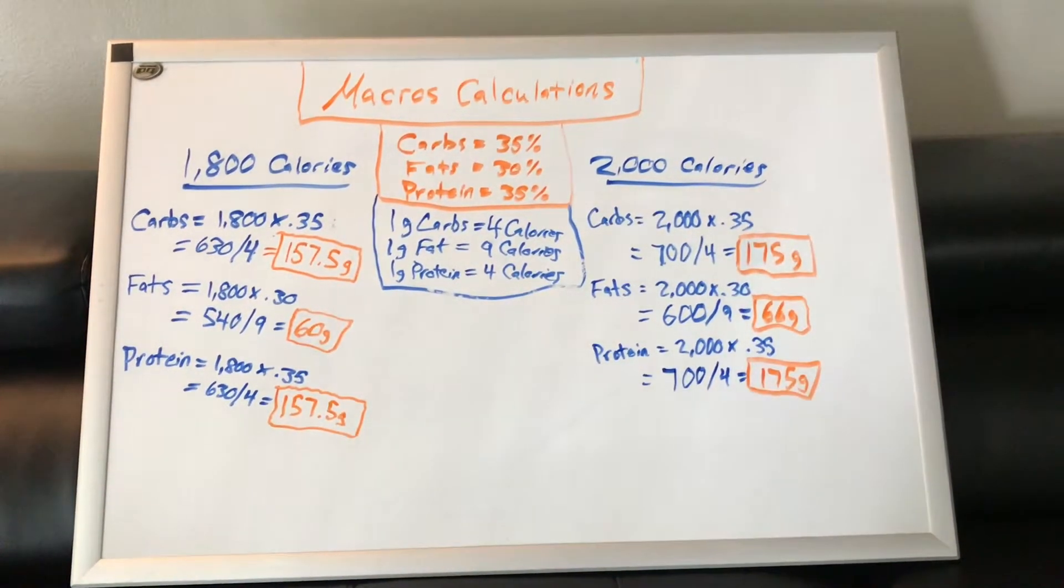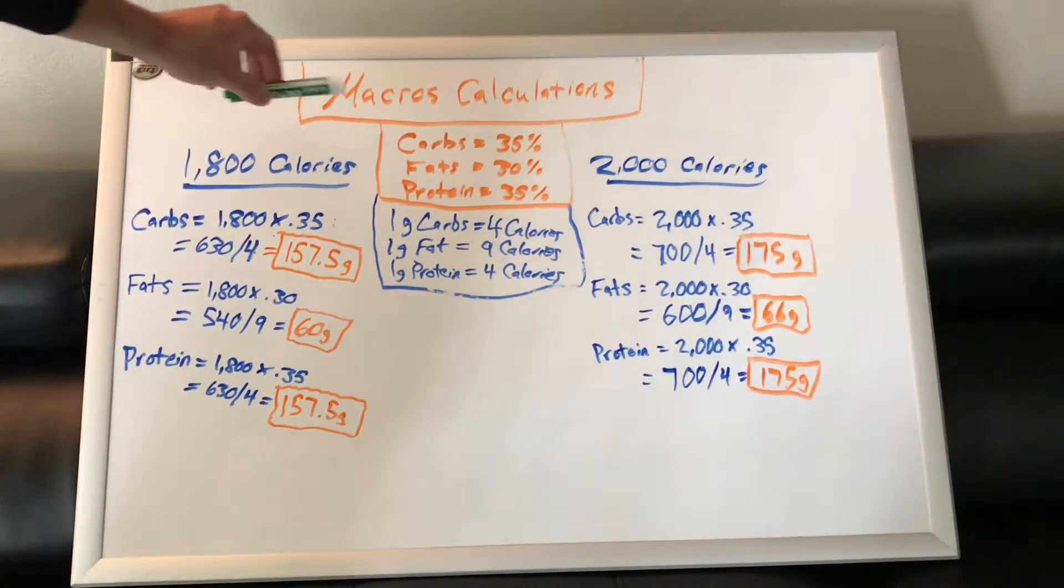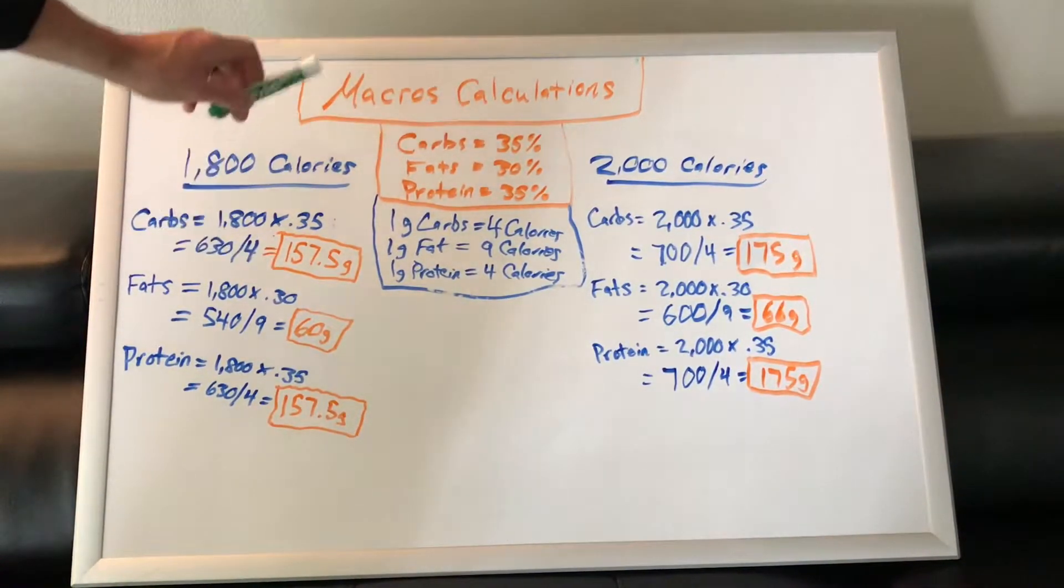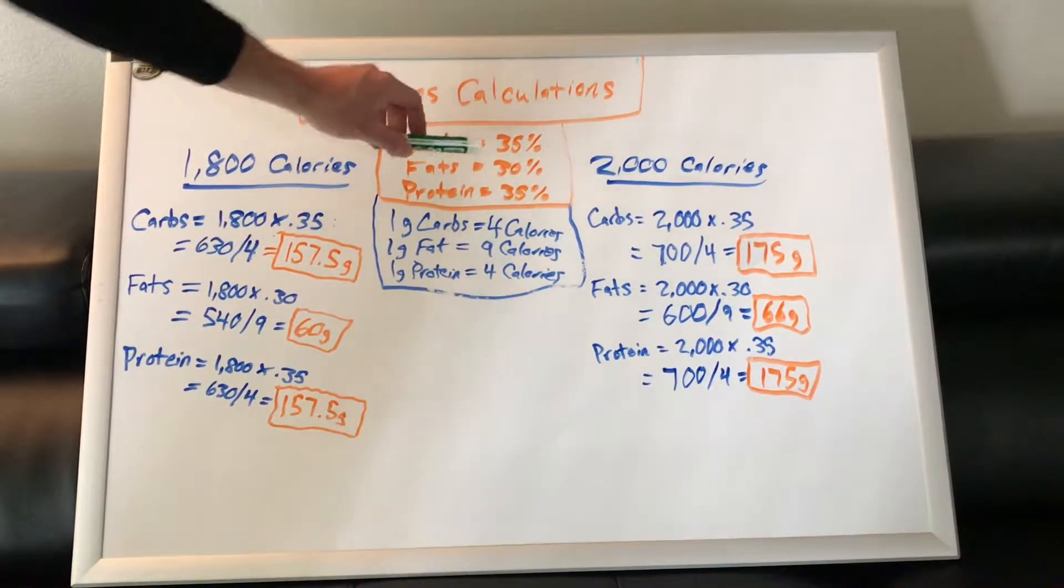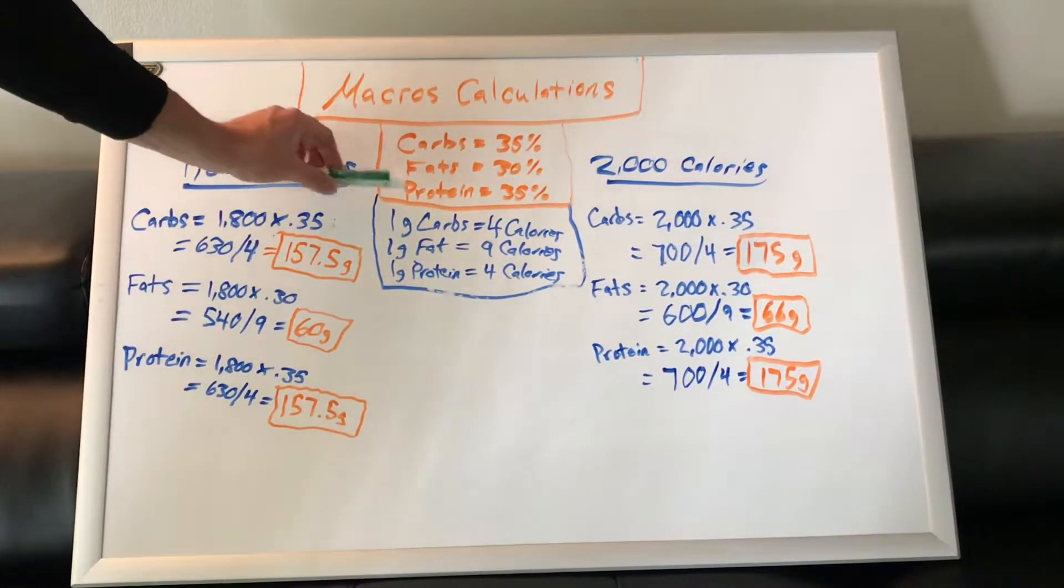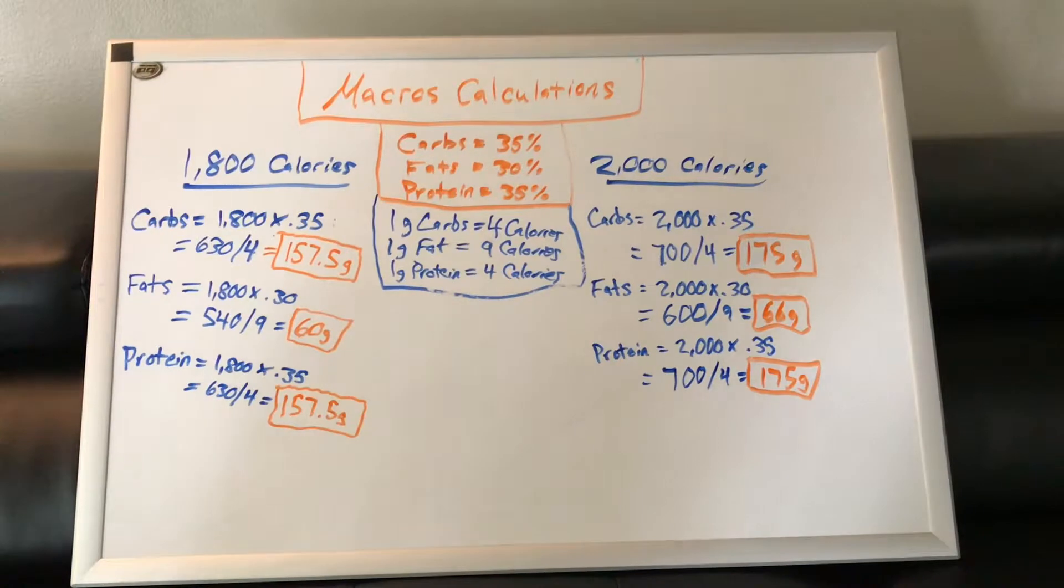There's a bunch of different macro ratios that you can do for weight loss. This is the one that I did that I had a really good experience with, and there's lots of different opinions out there. But when I was doing weight loss, my carbs were at 35%, my fat intake was at 30%, and my protein intake was at 35%.